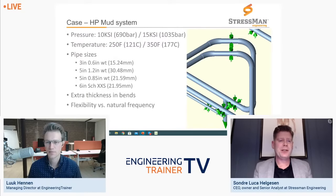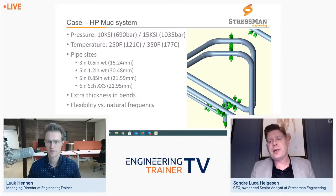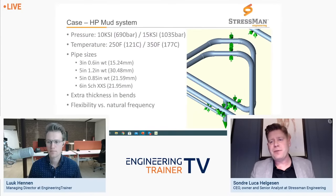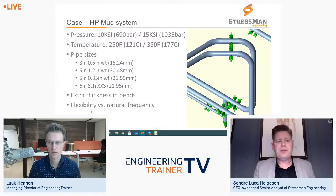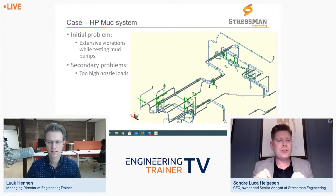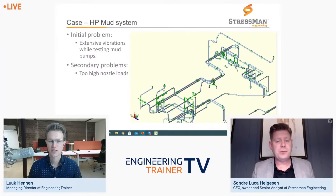The bends are long radius — 3D bends — but they are double-back bends with double thickness due to erosion problems from solids in the flow, making the system even stiffer. So there's a flexibility versus natural frequency battle: we need flexibility but also as high stiffness as possible. The initial problem was extensive vibrations. There were also issues with the initial analysis, so we had to redo everything. This was already a built system — they called us after everything was pressure tested and ready to ship.